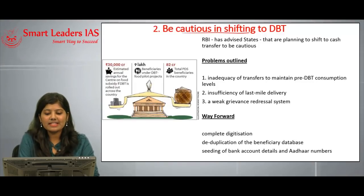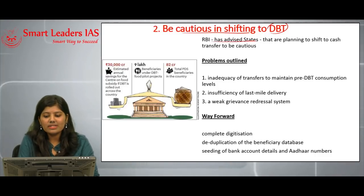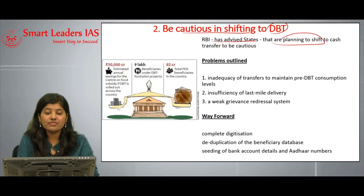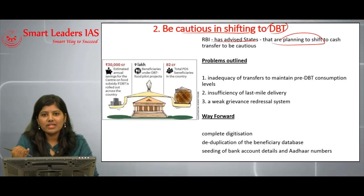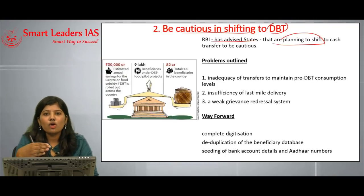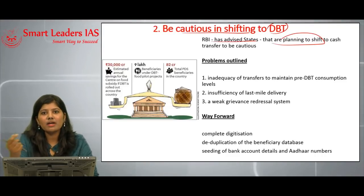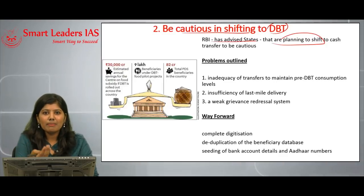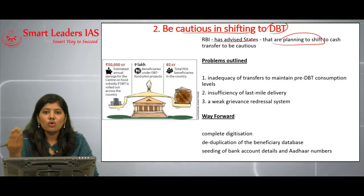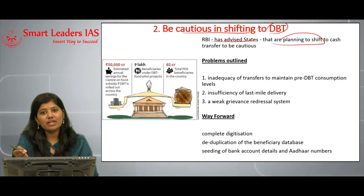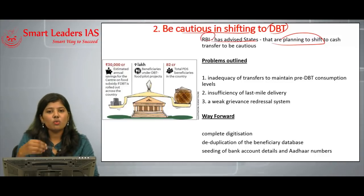The second topic is 'Be Cautious in Shifting to DBT,' which stands for Direct Benefit Transfer. The RBI has recently advised all states planning to shift to cash transfers to be cautious. This is because three union territories — Puducherry, Chandigarh, and Dadra and Nagar Haveli — experienced problems in adopting direct benefit transfer for food grains, and people found it difficult to receive money through DBT, preferring to revert to the old PDS system.